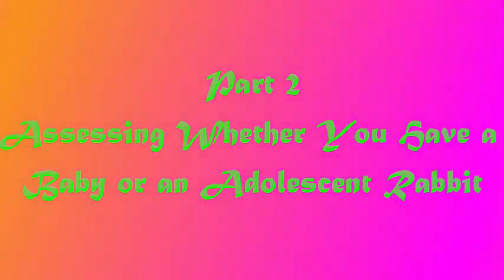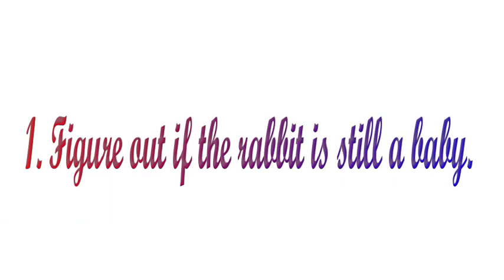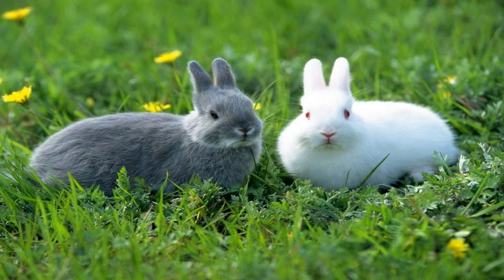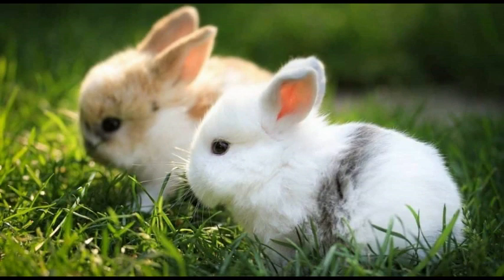Part 2: Assessing whether you have a baby or an adolescent rabbit. Figure out if the rabbit is still a baby — is it still growing and spending a lot of time with its mother? Baby rabbits are born blind and deaf, are very small, and are nursed by their mother once or twice every 24 hours, usually at night. By six to eight days, the eyes and ears open and they have thin fluff. By two weeks of age they will have a full coat of fur and start showing an interest in nibbling grass. By three weeks they are regularly leaving the nest. Young rabbits begin weaning from the mother at about four to five weeks, and weaning is usually complete by eight weeks of age.